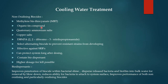Non-oxidizing biocides include: methylene bisthiocyanate (MBT), organotin compounds, quaternary ammonium salts, copper salts, and DBNPA (dibromonitrilopropionamide). It is recommended to select alternating biocides to prevent resistant strains from developing, particularly against sulfur-reducing bacteria. Non-oxidizing biocides can protect the system long after dosing, contain biodispersant properties, and allow higher dosage for kill when required.